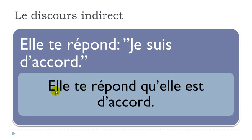To transpose this to the discours indirect form: elle te répond doesn't change, then que becomes qu'elle — removing the e before the vowel — and je changes to elle. The verb suis stays at the present form. The result is: elle te répond qu'elle est d'accord. In this case, the verb stays at the present form — no big changes. You put back all elements, modify if necessary, and that's your discours indirect structure.